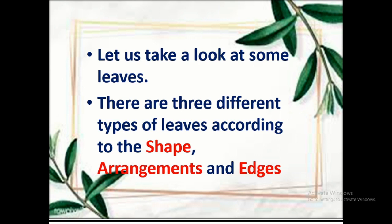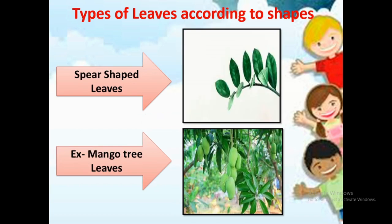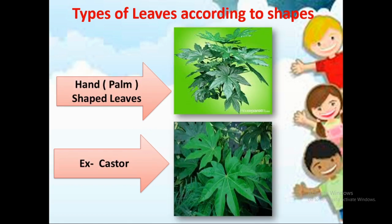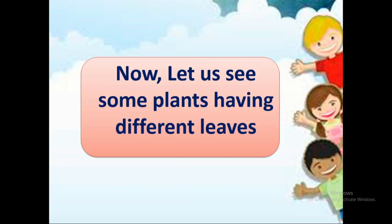There are many different types of leaves according to their shapes, arrangements, and edges. First, heart-shaped leaves — the peepal tree is one example. Second, spear-shaped leaves — the mango tree leaves are an example. Next, palm-shaped leaves — castor is an example. Then needle-shaped leaves — the pine tree is an example.